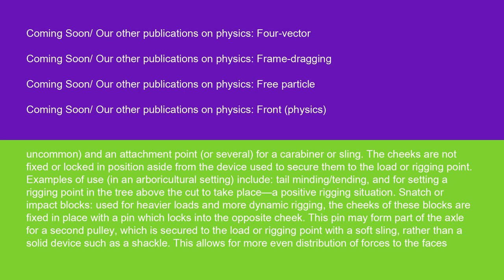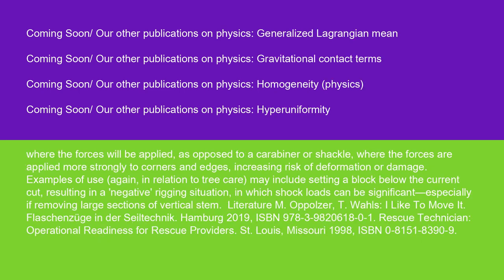Snatch or impact blocks: Used for heavier loads and more dynamic rigging. The cheeks of these blocks are fixed in place with a pin which locks into the opposite cheek. This pin may form part of the axle for a second pulley, which is secured to the load or rigging point with a soft sling rather than a solid device such as a shackle. This allows for more even distribution of forces to the faces where the forces will be applied, as opposed to a carabiner or shackle where the forces are applied more strongly to corners and edges, increasing risk of deformation or damage.